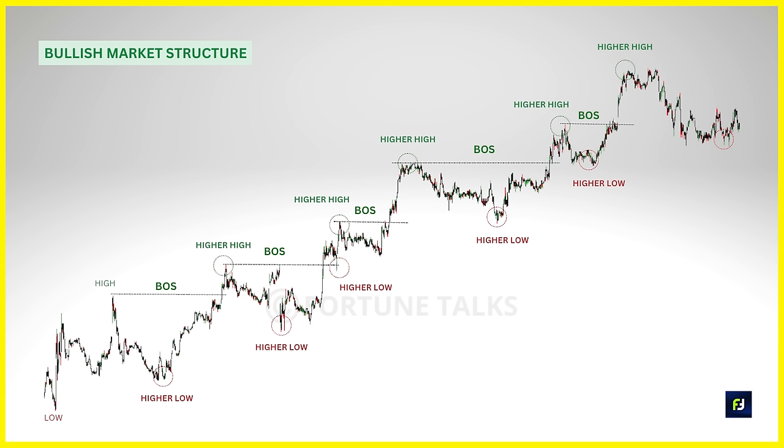Once a Change of Character takes place, we focus our analysis toward the formation of either a bearish market structure or a sideways market structure. We should consider the possibility of both structures until we get solid confirmation for the continuation of a bearish market structure. During a downtrend or bearish market structure we expect price to form lower swing highs and lower swing lows. As an SMC trader you have to train your eyes to find these important levels, though it is not as easy as it appears in most trading textbooks.